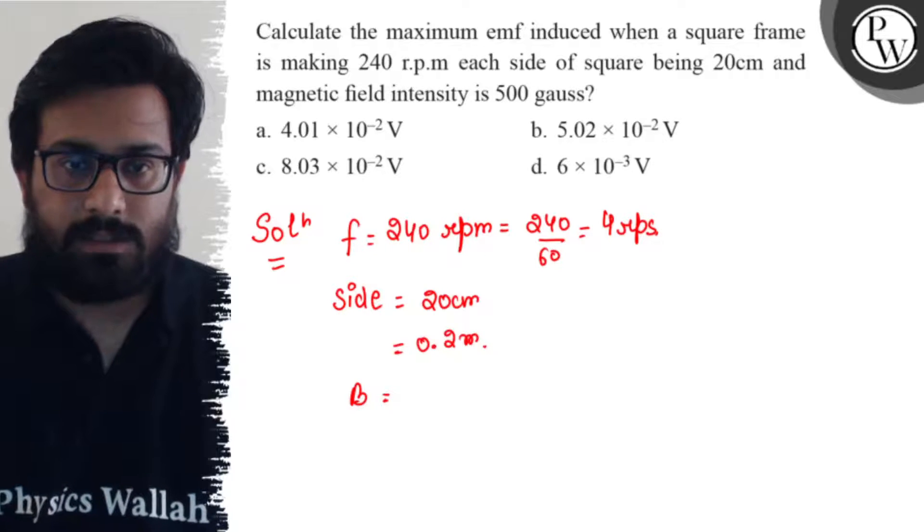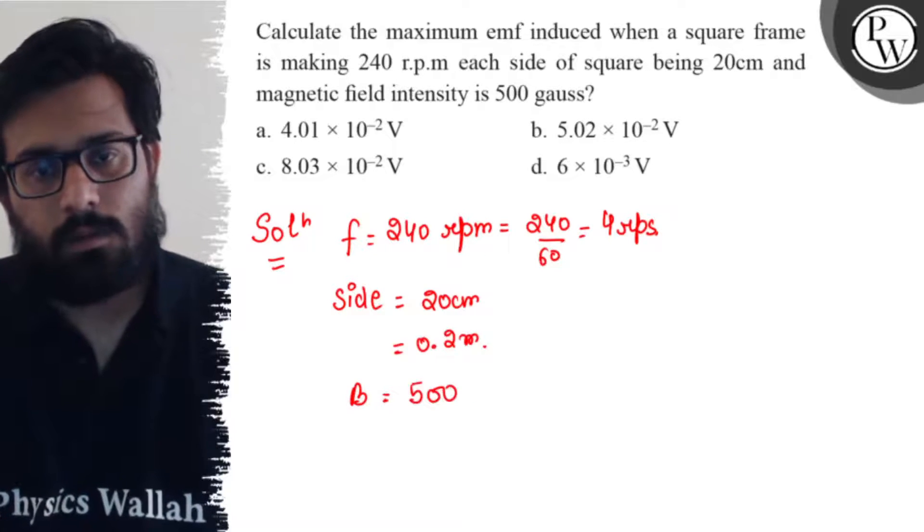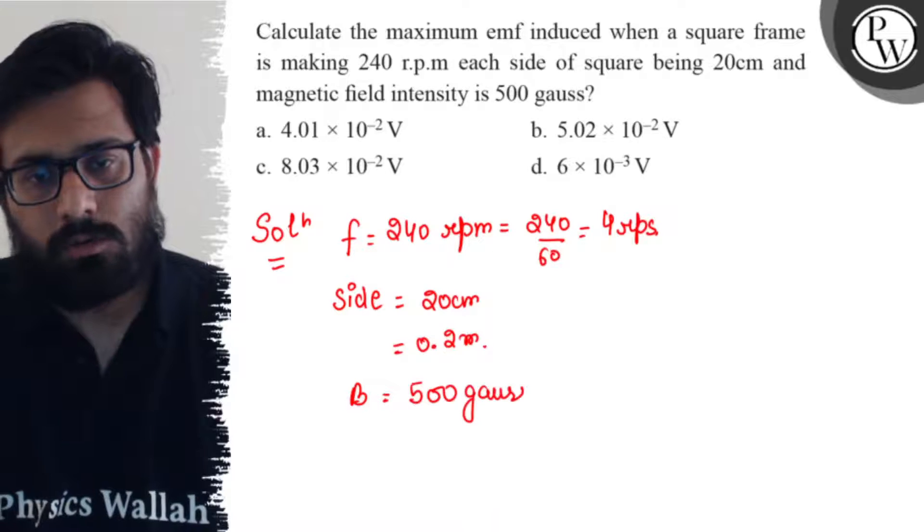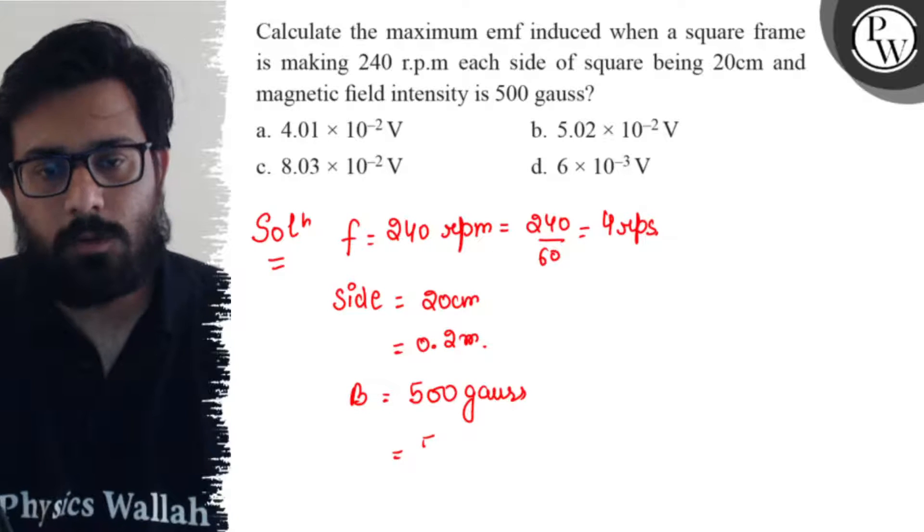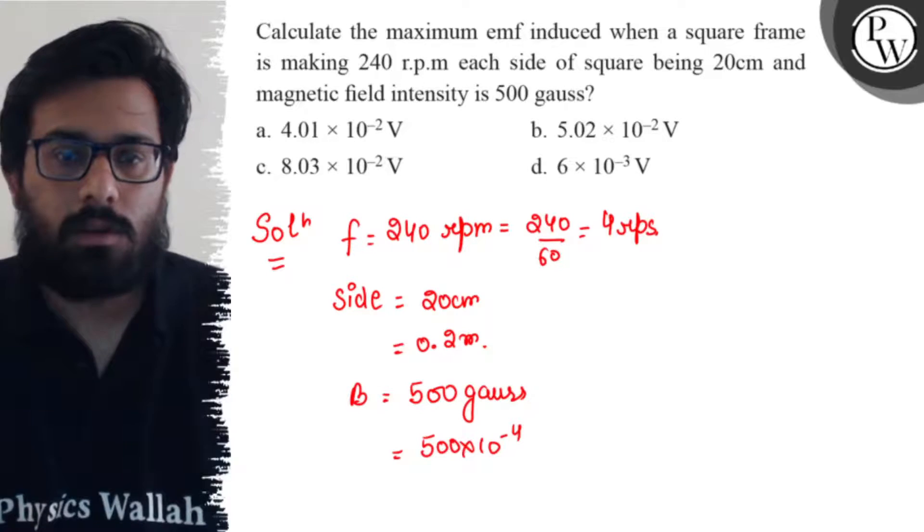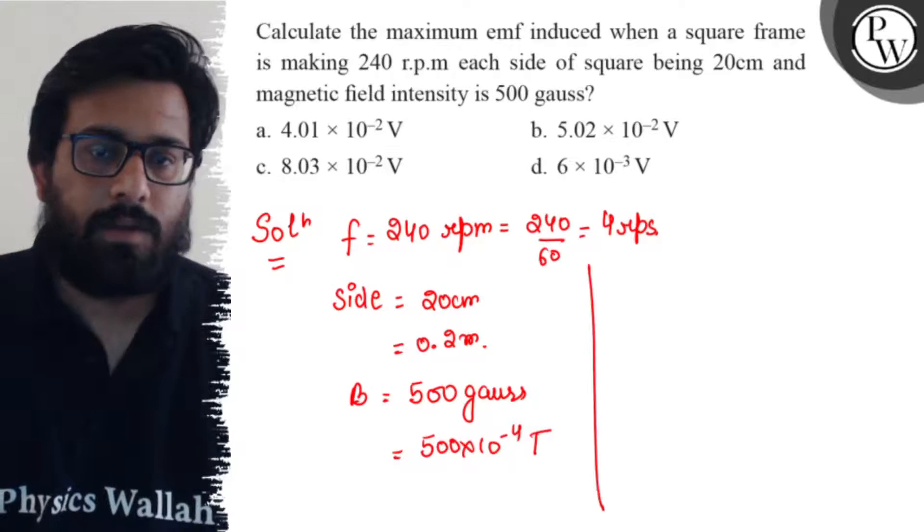Magnetic field intensity is given as 500 gauss. Converting into tesla, this comes to be 500 × 10^-4 tesla. Solving it further,